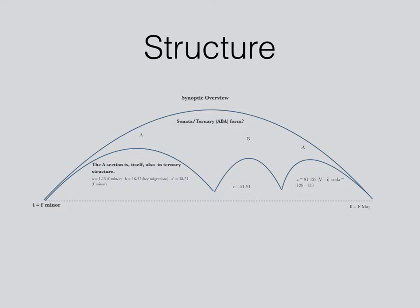Sandwiched in between the two A sections is a very interesting B section, which I won't discuss in detail here, but it also shares many of the characteristics — many of the same devices — that Brahms uses at the beginning and the closing section.